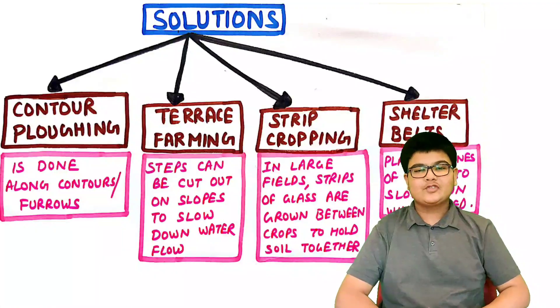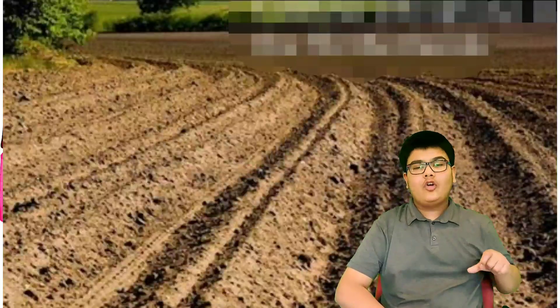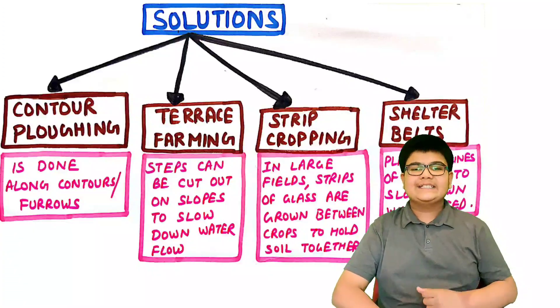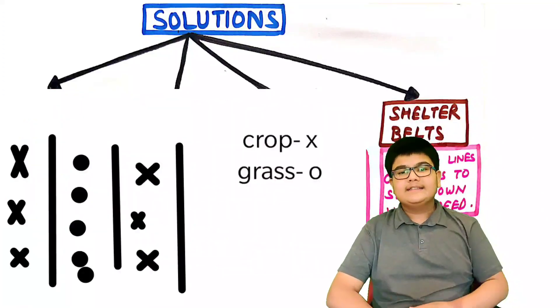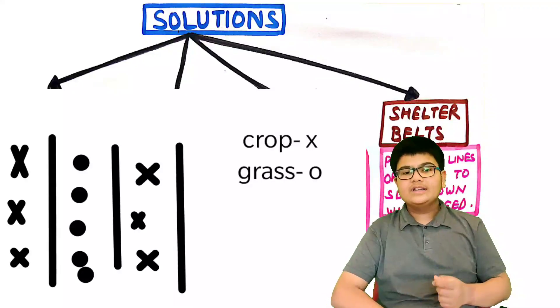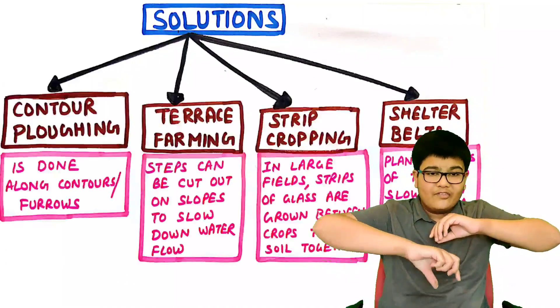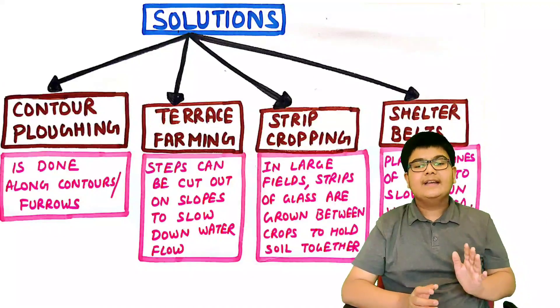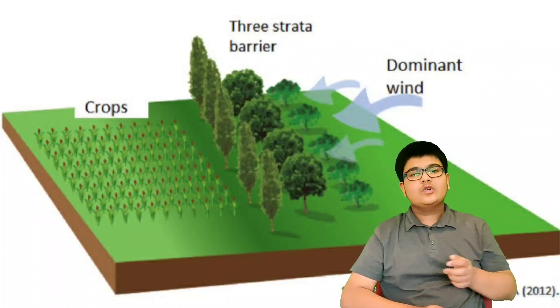Solutions to soil erosion include: first, contour plowing, where plowing is done along contours or furrows in a specific way. Second, terrace farming, where steps are cut on slopes to slow down water flow so that soil deposited at each step is retained. Third, strip cropping, where strips of grass are grown between crops in large fields to hold the soil together and prevent erosion. Fourth, shelter belts, where rows of trees are planted to slow down wind speed.